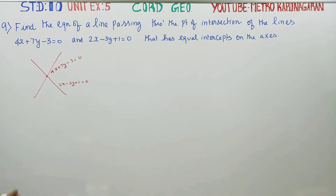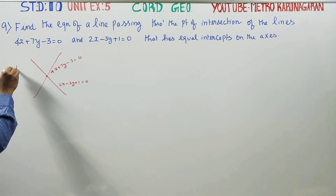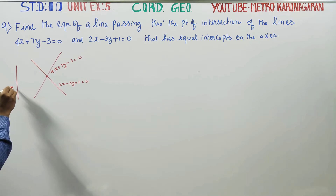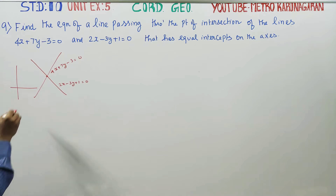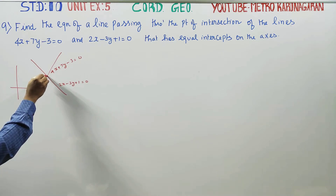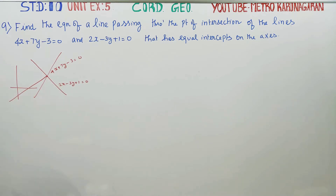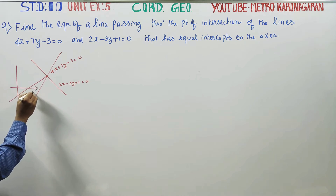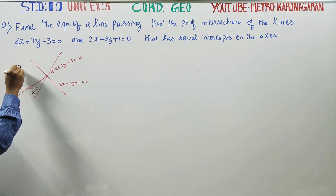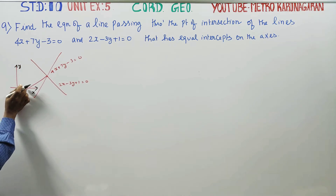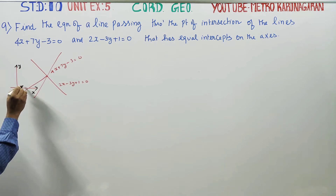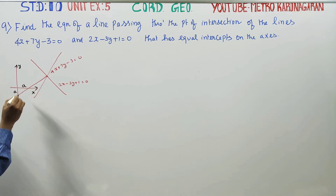The required straight line has equal intercepts on the x-axis and y-axis. For example, if the x-intercept is 5cm and the y-intercept is also 5cm, those are called equal intercepts. We denote both intercepts as 'a'.